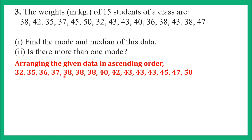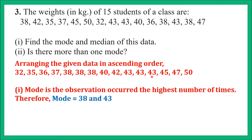Looking at this data, 38 repeats 3 times and 43 also repeats 3 times. So there is more than one mode in this question — there are two modes: 38 and 43. Mode is the observation occurred the highest number of times, therefore mode = 38 and 43.